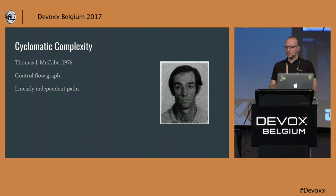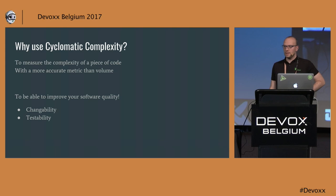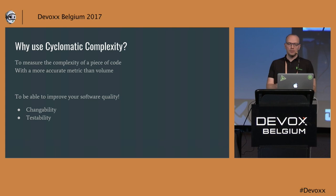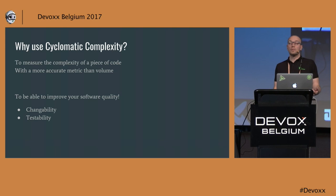Why should we use cyclomatic complexity? The idea is you can measure the complexity of a piece of code and therefore be able to improve it. If you take measures to not reach too much complexity, you'll be able to write more maintainable, more readable, more testable code. A large piece of code is more complex than a small piece, so you could look at lines of code, but cyclomatic complexity does have value instead of just looking at the volume of your code.